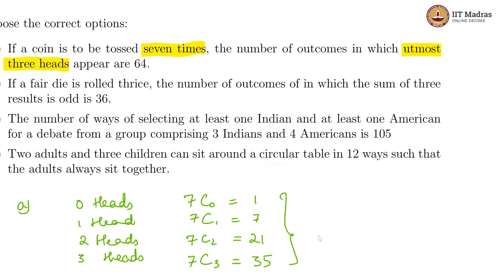So, all of these put together gives us 64 outcomes. So, this is 64 and this is correct.